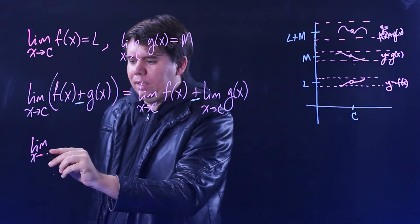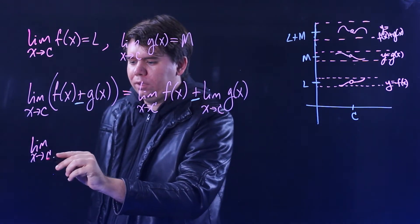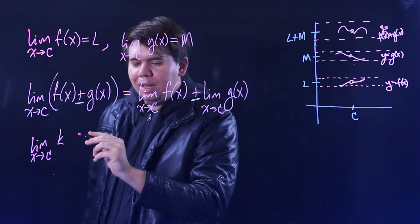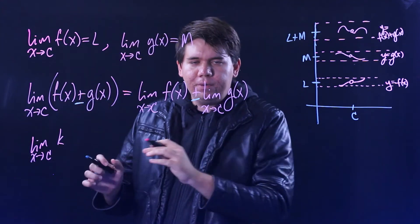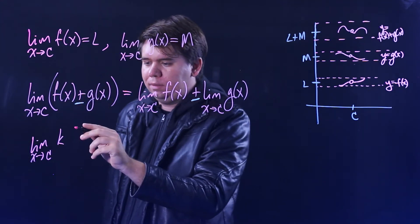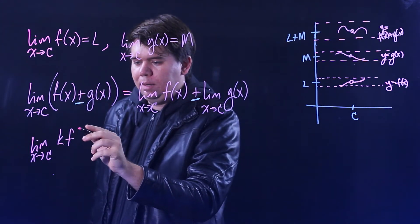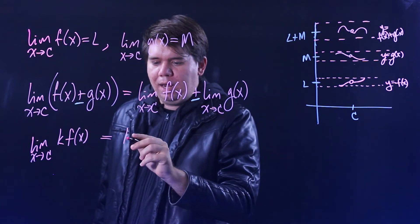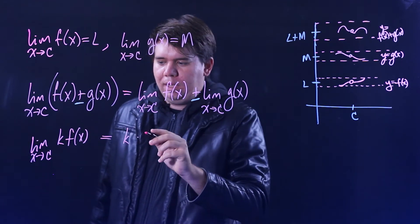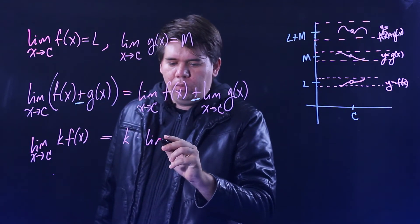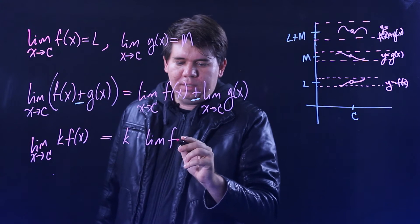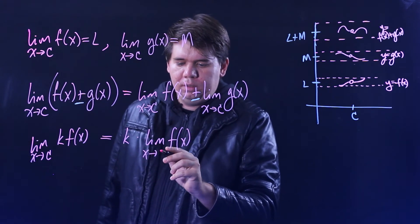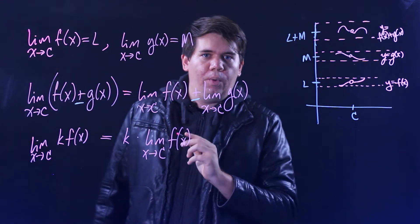More generally, we'd say: the limit as X approaches C of some constant — like two, or seven, or whatever your constant is — times a function, is just that constant times whatever the limit of the original function was.